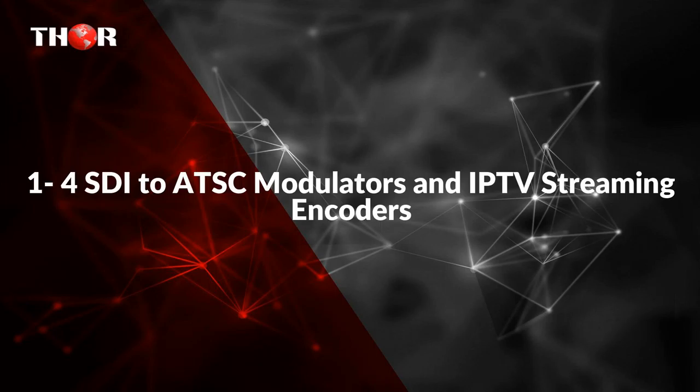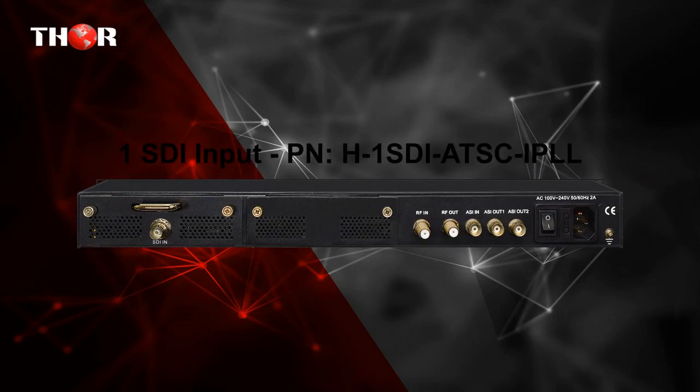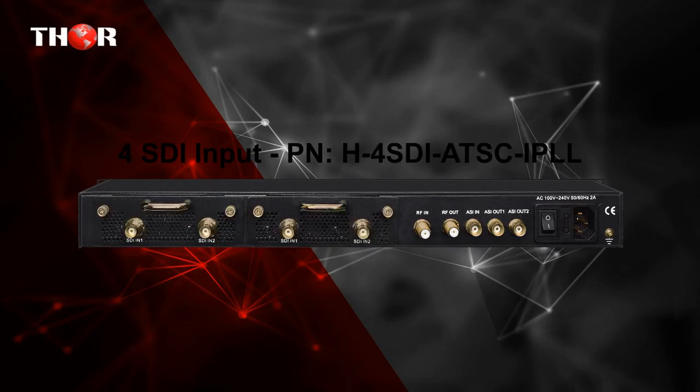The second unit is 1-4 SDI to ATSC modulators and IPTV streaming encoders. It converts one to four HD-SDI digital video inputs to encoded MPEG-2 or H.264 streams. Outputs AAC, IP, and RF in 8-VSB ATSC format for US over-the-air OTA.